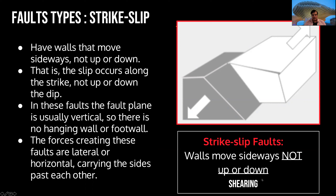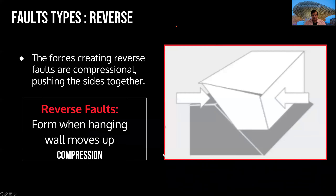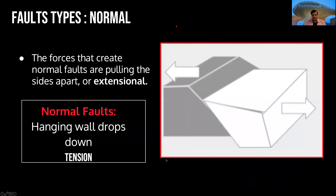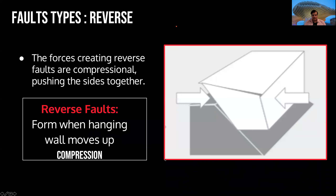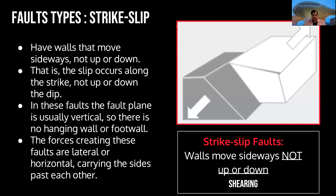This here is shear. Before we have compression, and before we have tension. The tension is separating, the compression is pushing them together, and the shear is dividing them into parts like scissors.